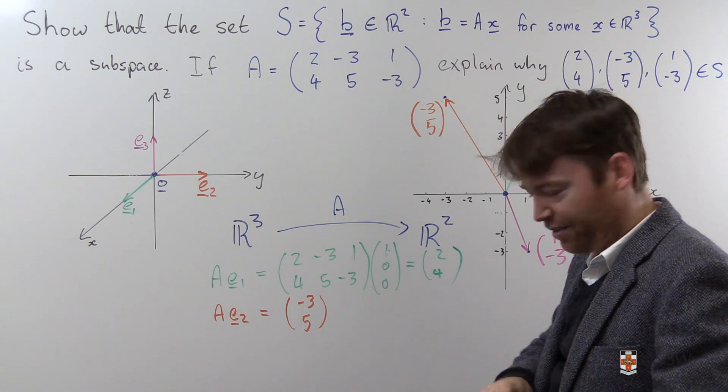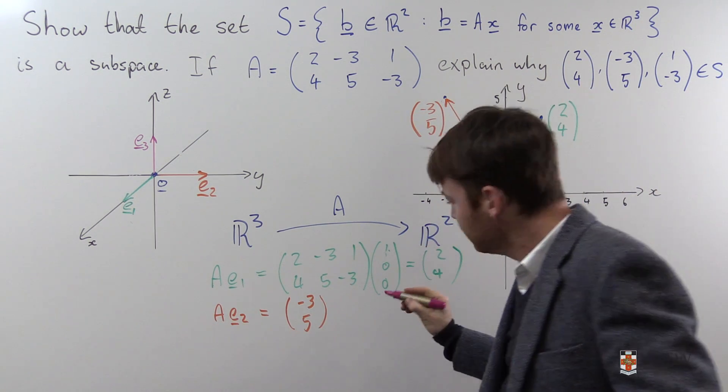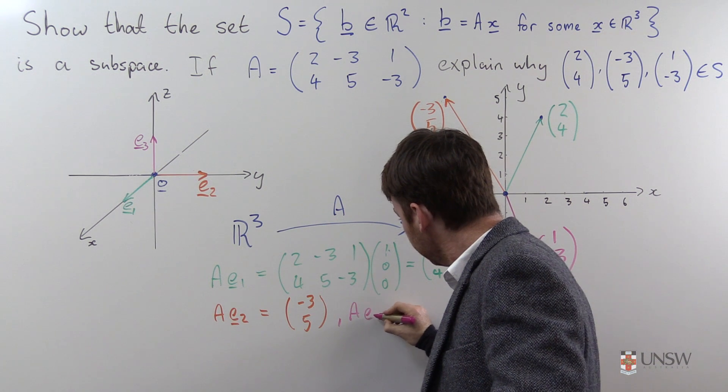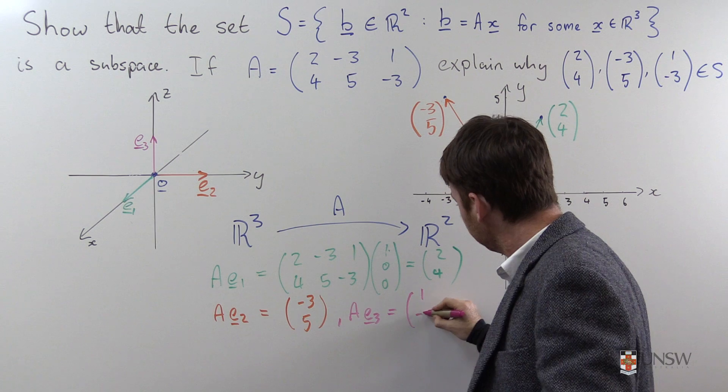And finally, A E3 is equal to the third column, 1, negative 3.